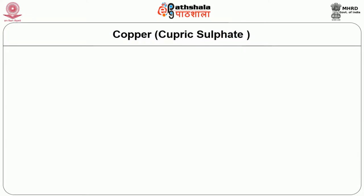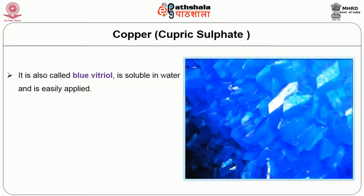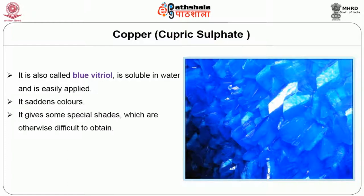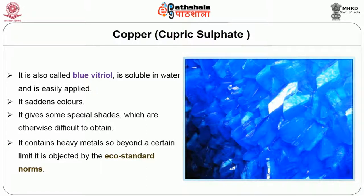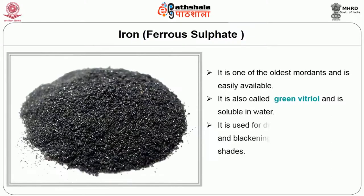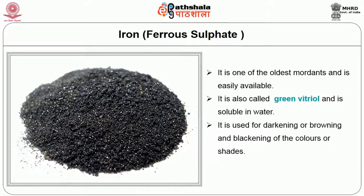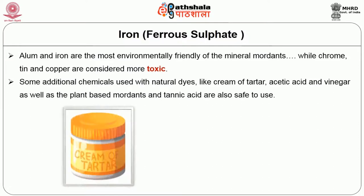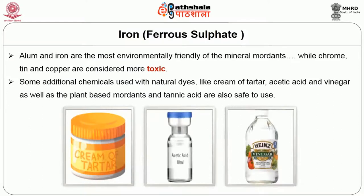The dulling mordants include copper and iron. Copper, also called blue vitriol, is soluble in water and easily applied. It saddens colour and gives some special shades which are otherwise difficult to obtain. It contains heavy metals, so beyond a certain limit it is objected to by eco standard norms. Iron is one of the oldest mordants and is easily available. Also called green vitriol, it is soluble in water and is used for darkening, browning and blackening of colours. It normally gives grey to black shades. Alum and iron are the most environmentally friendly of the mineral mordants.